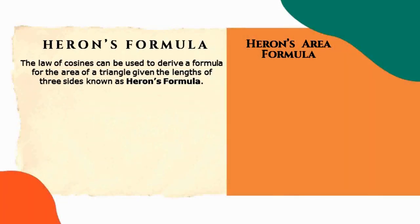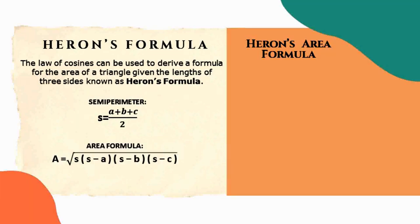The law of cosines can be used to derive a formula for the area of a triangle given the length of three sides known as Heron's formula. In order to solve the area, we will need to solve the semi-perimeter first. The semi-perimeter is s is equal to a plus b plus c over 2. The area formula is A is equal to square root of s which is the semi-perimeter times s minus a times s minus b times s minus c.